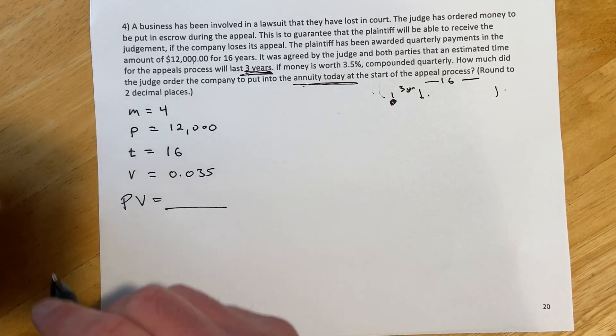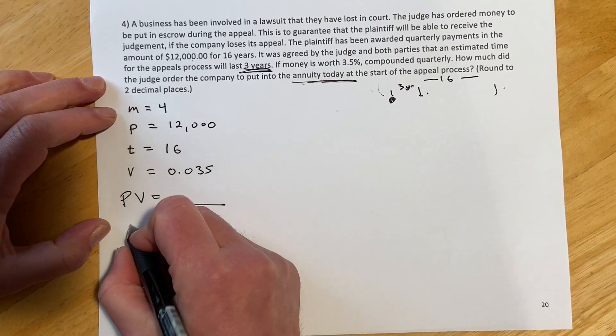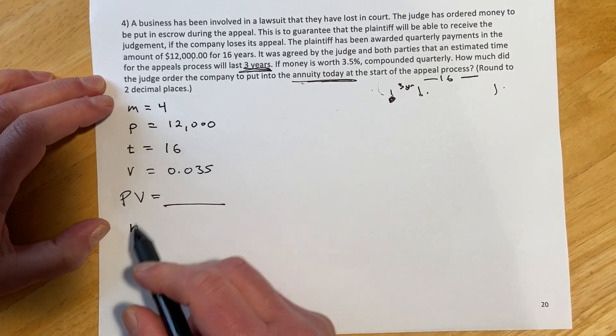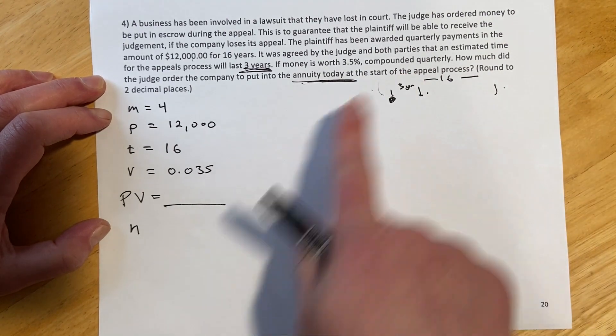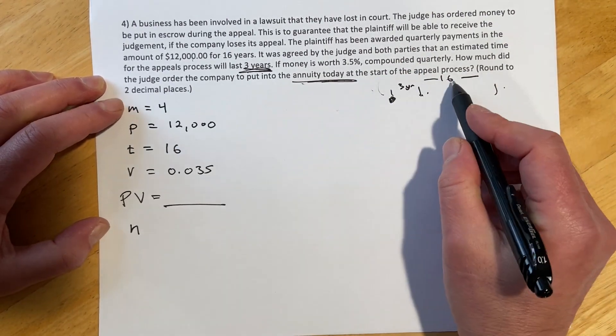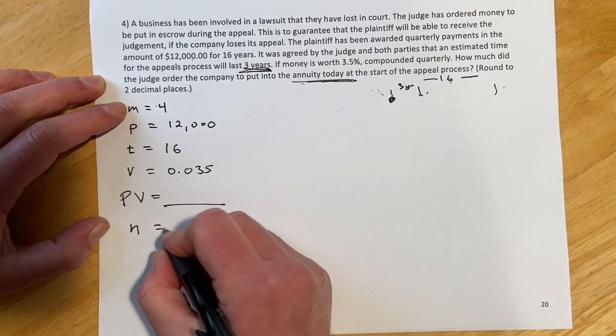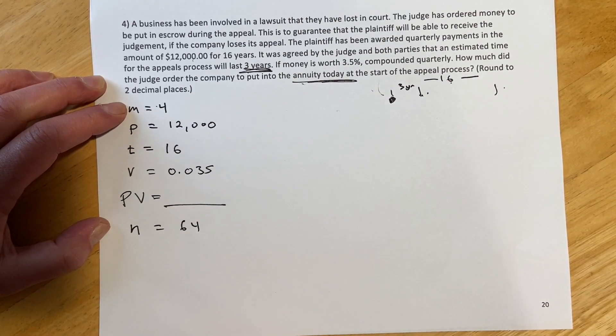And then I should also find our two calculated values, I keep forgetting to do that. So our N, that is going to be our total number of payments. So that's not the three years, right? That's the 16 years we would have payments for. So it'd be 16 times 4, so that would be 64 total payments.